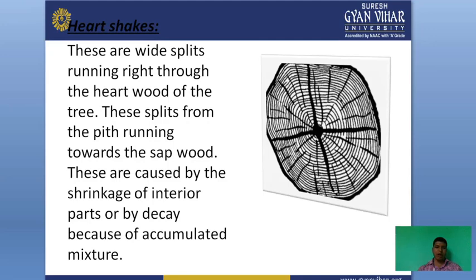The next defect is heart shakes — these are radial splits running through the heartwood of the tree, forming from the pith running toward the sapwood. These are caused by the shrinkage of interior parts due to decay from accumulated moisture. Heart shake is caused when the inner part of the tree decays due to insects or other interior causes, resulting in shrinkage.